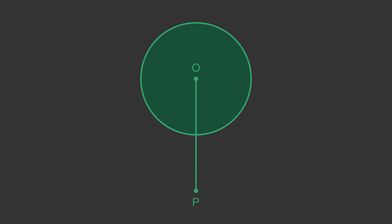We can see why this rule might be true. Let's draw point P so that it is directly below the centre of the circle. This diagram is symmetrical — the right side is a mirror image of the left side. Now let's draw the tangents. Since the diagram is symmetrical, there is no reason to expect one tangent would be longer than the other. This doesn't prove that the tangents are equal, but it makes it look like they might be.